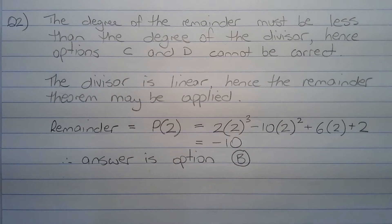Now the degree of the divisor is 1, which means that the degree of the remainder must be 0. In other words, the remainder must be a constant.